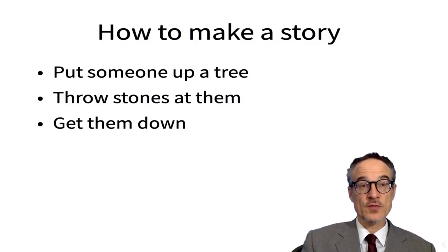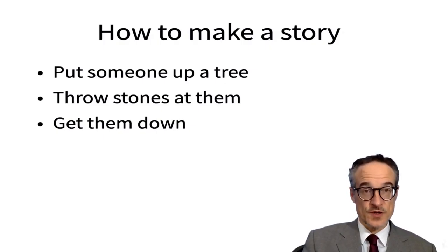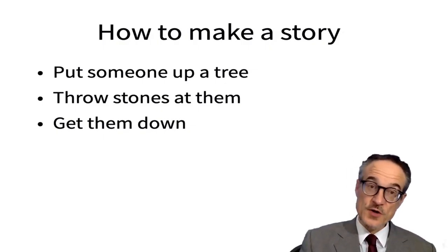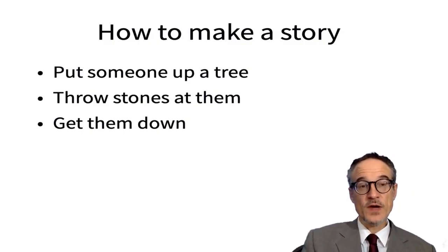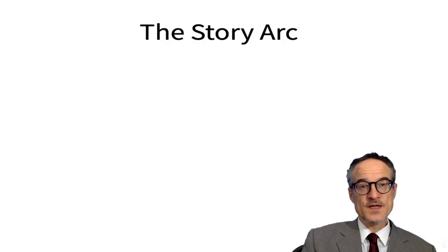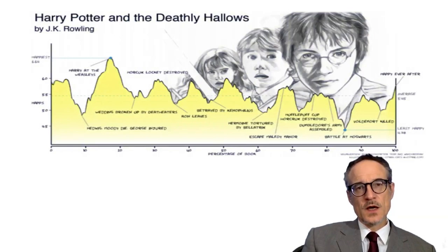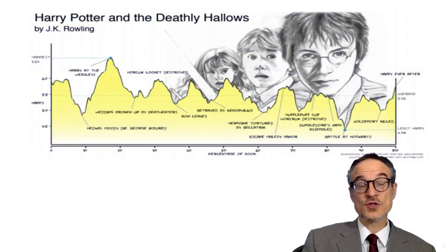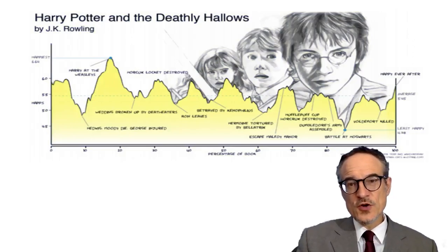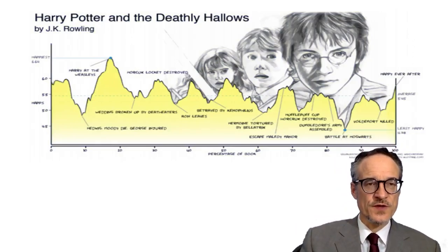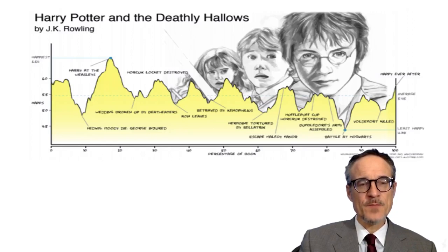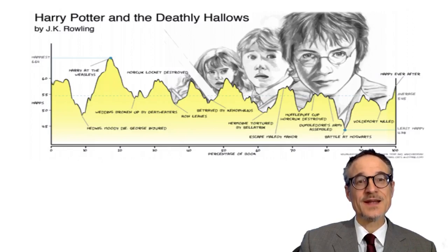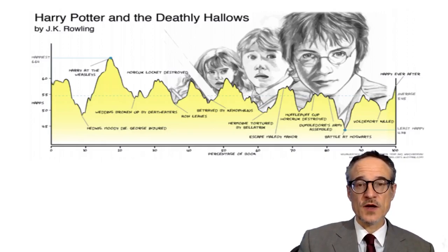To make a story in a very simple way: put someone up a tree, throw stones at them, and then get them down. So we have our orientation at the beginning — someone is in a tree. A complication — we're throwing stones at them, making their life difficult. And then we get them down. This is sometimes also called the story arc. Here's an example from the last Harry Potter story, looking at Harry's fortunes — things get better, then much worse, then better, then worse, going up and down like a rollercoaster.